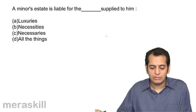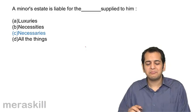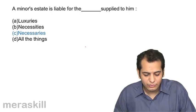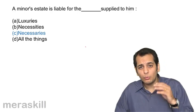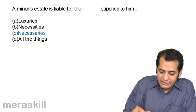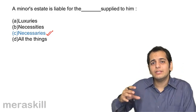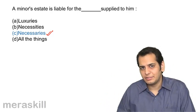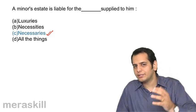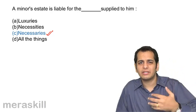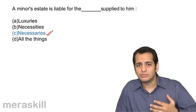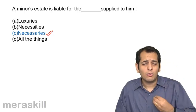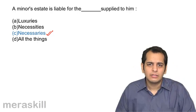The answer is Necessaries. Please remember, many students will give an answer of Necessities — no, it's not Necessities, it's Necessaries. Necessaries includes many other things apart from Necessities. Necessities are only food, clothing and shelter, but Necessaries includes many other things like education, medical support, getting sports material, getting a cycle to go to school — all these things are included in Necessaries.